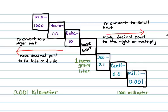Going down the stairs, I'm converting to a smaller unit, moving the decimal point to the right depending on how many stairs I go down. If I go up the stairs, I'm converting to a larger unit, moving the decimal point to the left that many stairs.